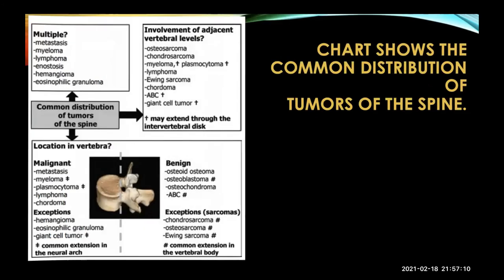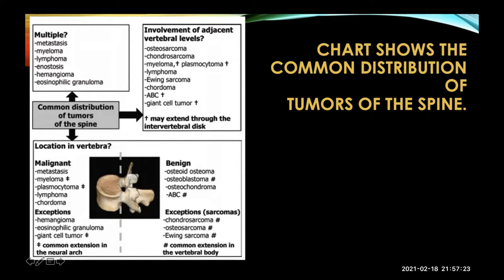Regarding tumor location: if you divide the spine into two parts, and the tumor is in the anterior part — the vertebral body — you most commonly see a malignant tumor: metastasis, myeloma, plasmacytoma, lymphoma, or chordoma. Exceptions include hemangioma or giant cell tumor. In the posterior elements, including the neural arch, the most common is osteoid osteoma and osteoblastoma; exceptions include chondrosarcoma. If multiple sites are involved, the first thing that should come to mind is metastasis, followed by myeloma or lymphoma. If adjacent vertebral levels are involved — one above and one below — those are seen in osteosarcoma, chondrosarcoma, and myeloma.